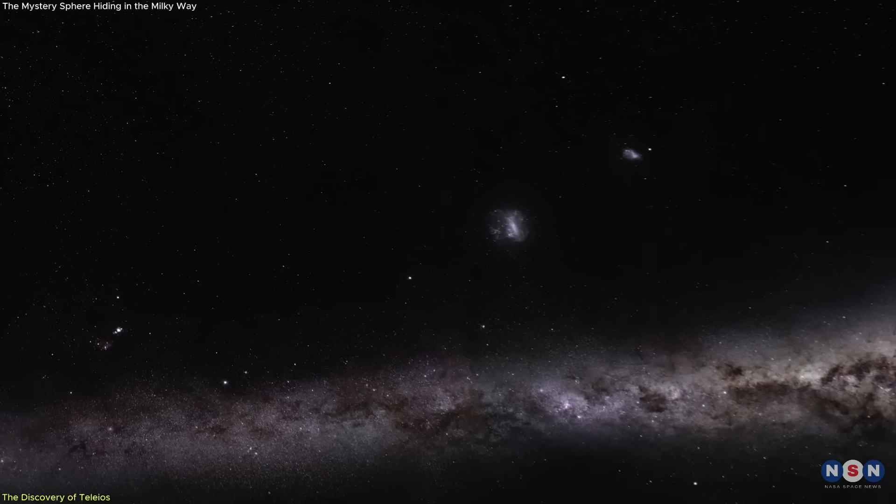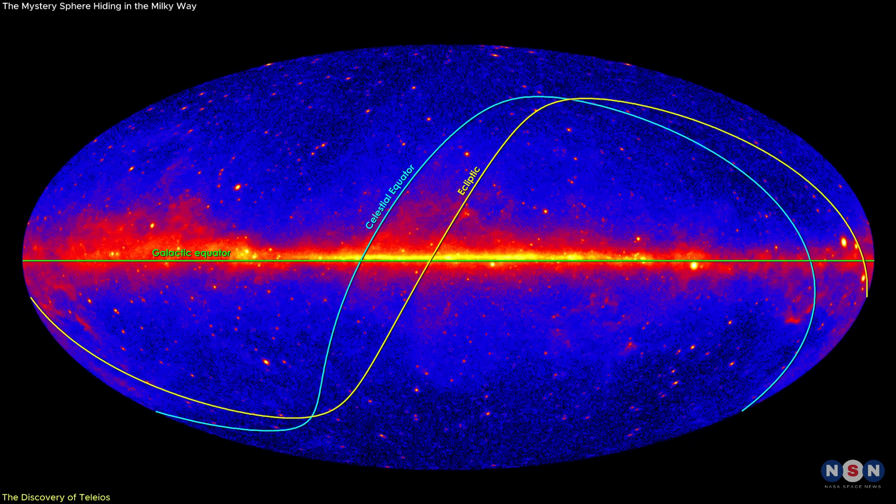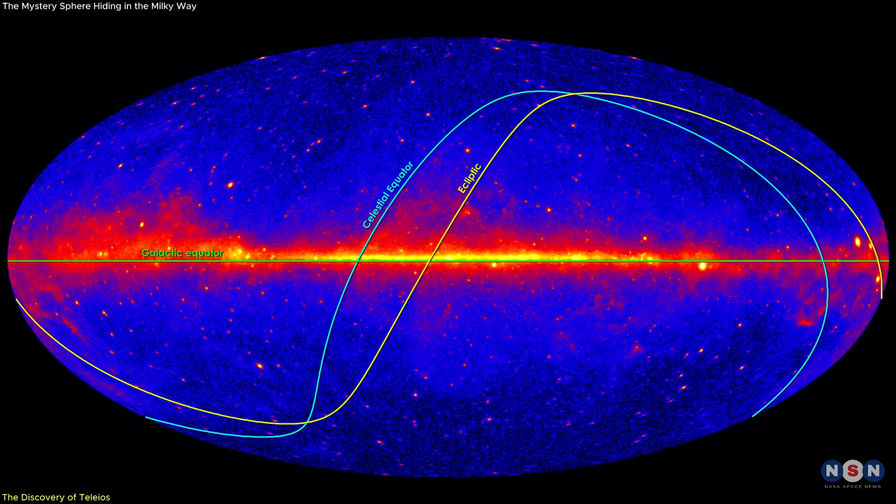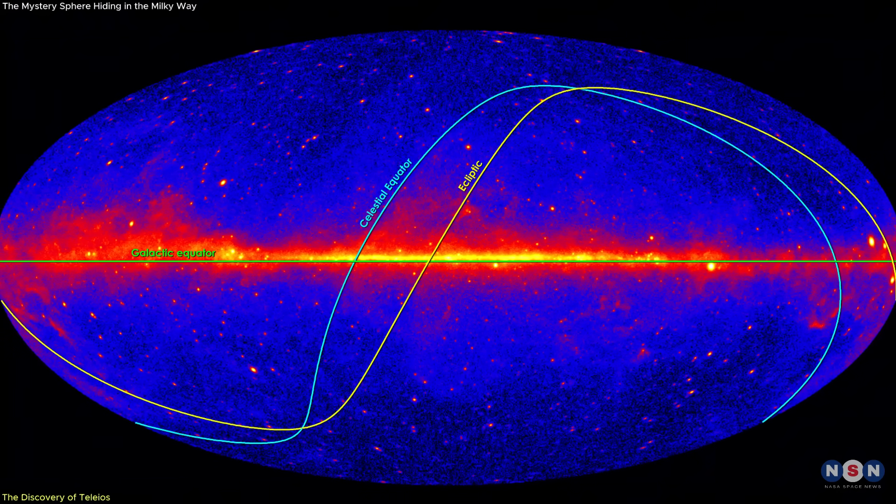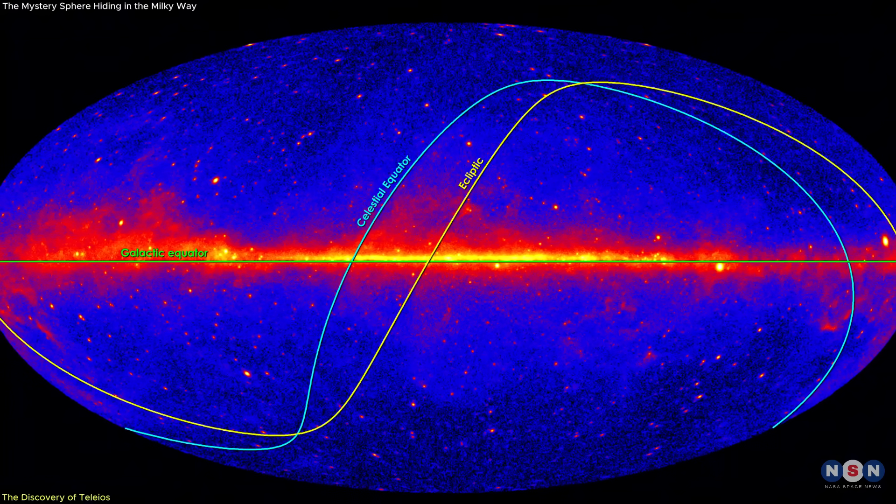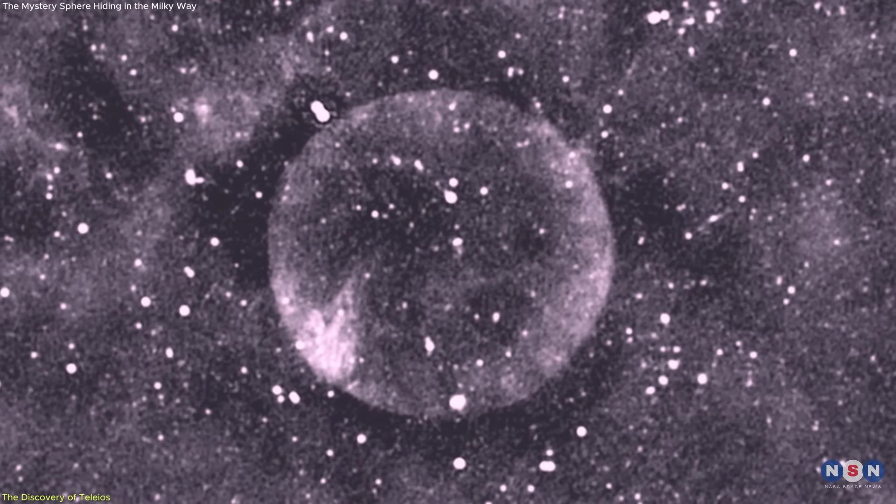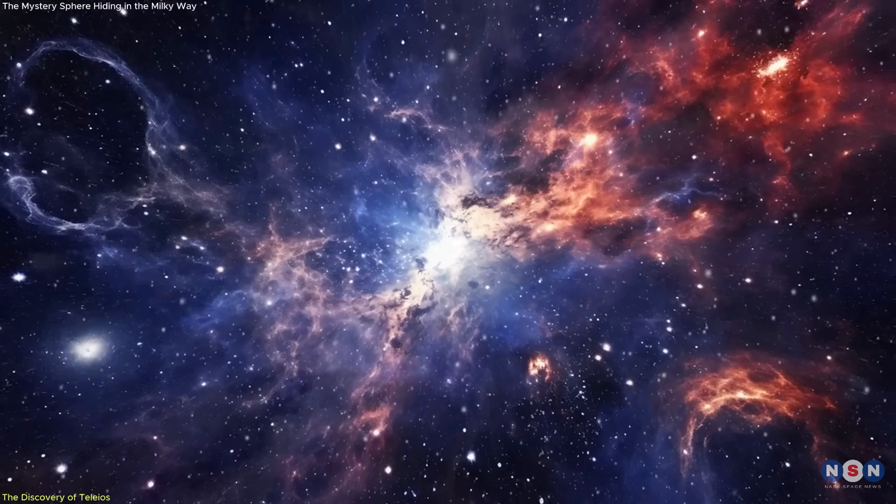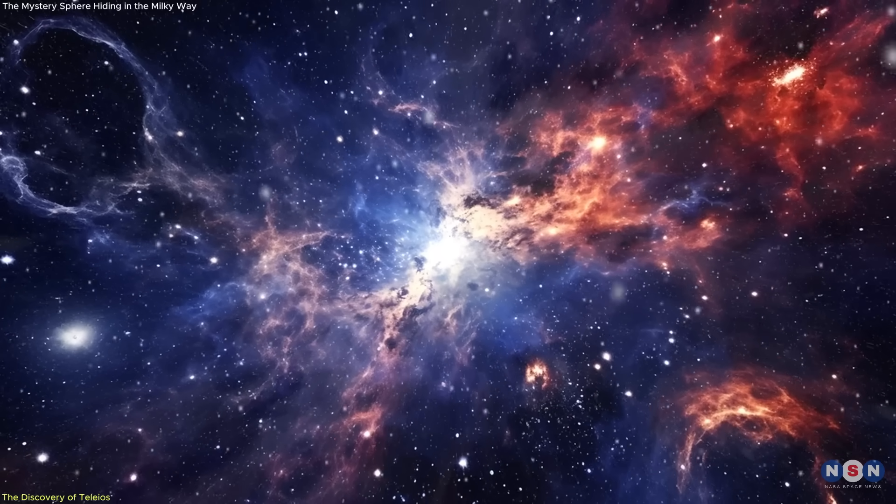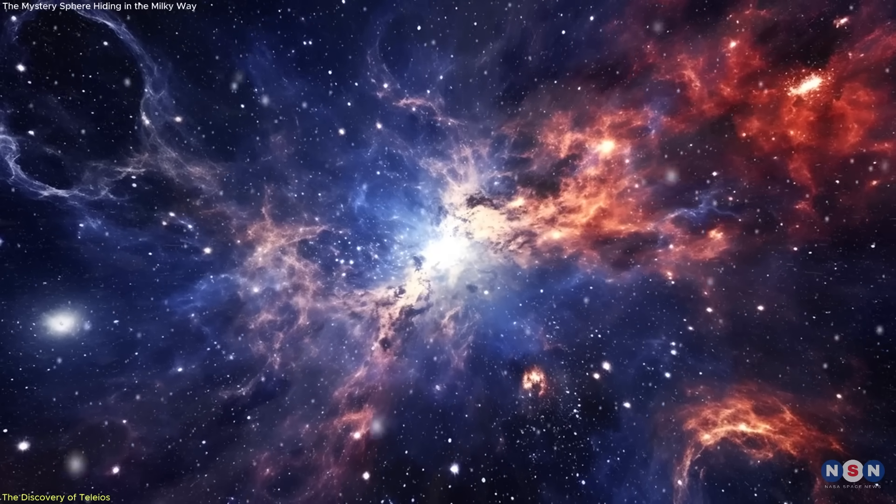Its position adds to the mystery. It lies 2.2 degrees below the galactic plane, far from the crowded regions where stars and dust normally cluster. That isolation may have allowed whatever force created Teleos to unfold undisturbed for thousands of years, preserving its beautiful, eerie shape in the dark.